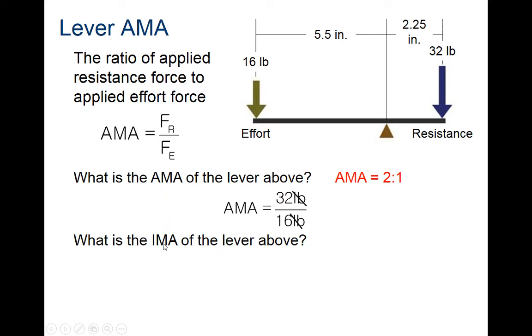That's the actual. Let's do the ideal. We're going to take the effort distance and divide it by the resistance. In this case, our effort distance is 5.5 inches, and our resistance distance is 2.25.